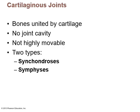Moving to cartilaginous joints — bones are united by cartilage, there's no joint cavity, and they're not highly movable. There are two types. The words in this chapter sound a lot alike, so you really want to make note cards and pay attention to how the words are spelled and pronounced.